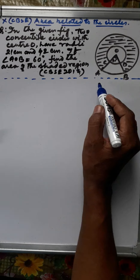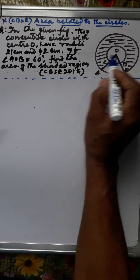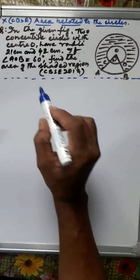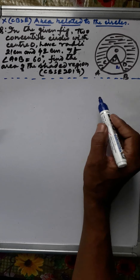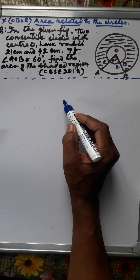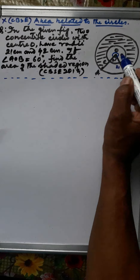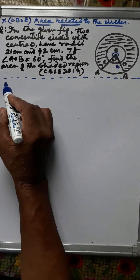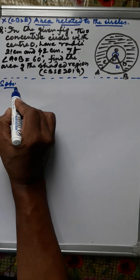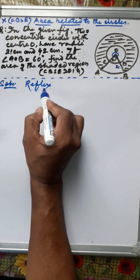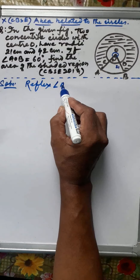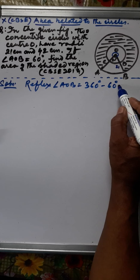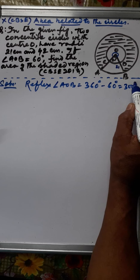First, the angle AOB is given as 60 degrees and the radius is given as 21 centimeters. So we can find the reflex angle AOB — reflex angle AOB will be 360 degrees minus 60 degrees, which equals 300 degrees. Note that reflex angle AOB and reflex angle COD will be the same.